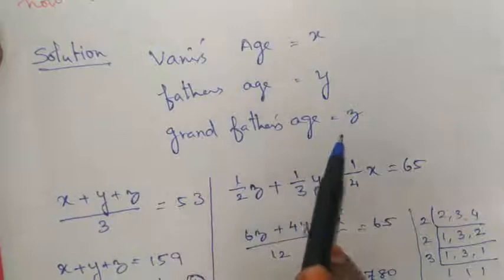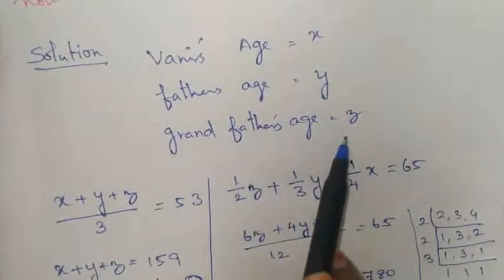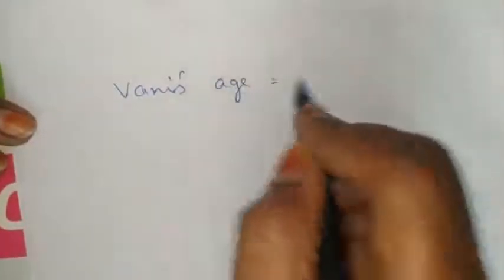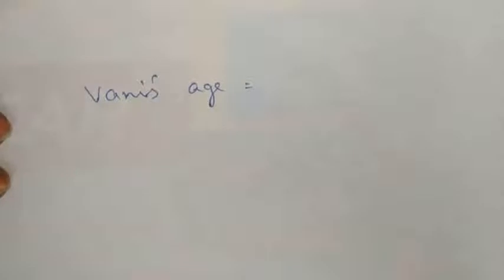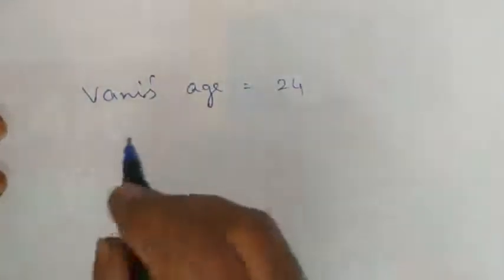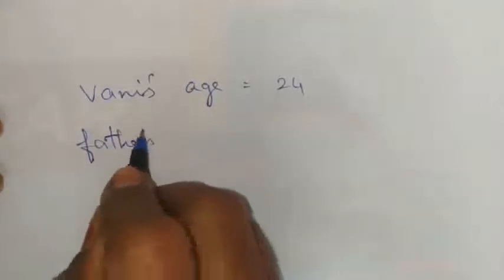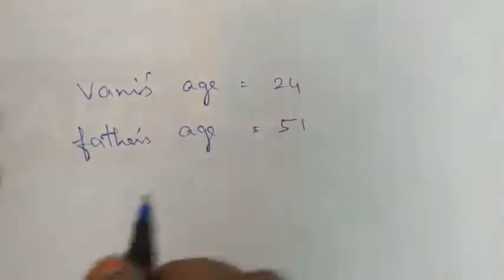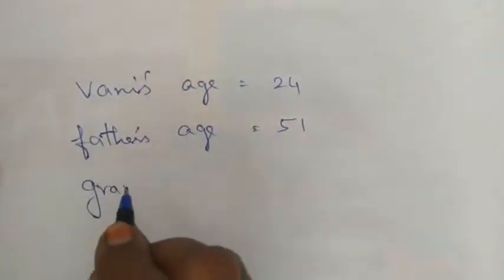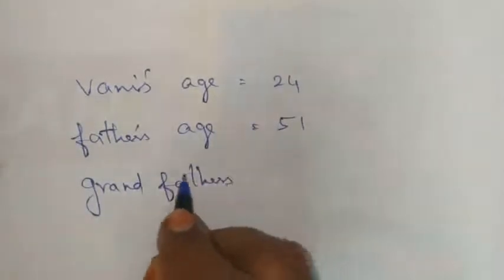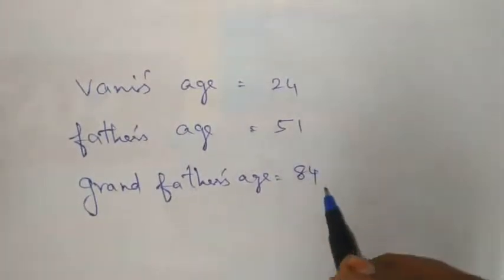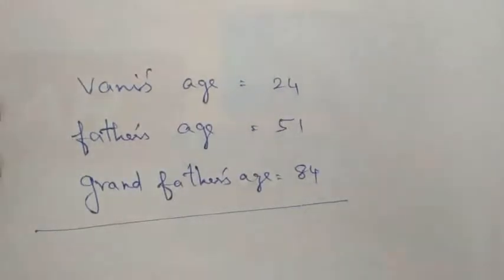Vani's age x is 24. Father's age y is 51. Grandfather's age z is 84. Now you can write down the values. Ok students, if you have any doubt, comment in the comment box. Thank you.